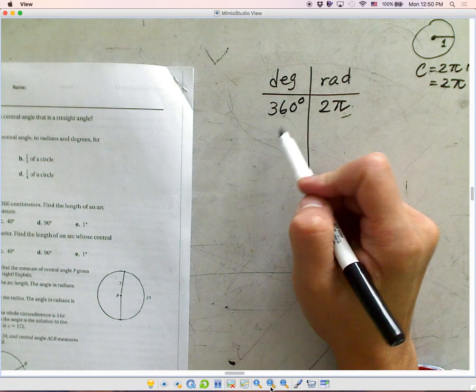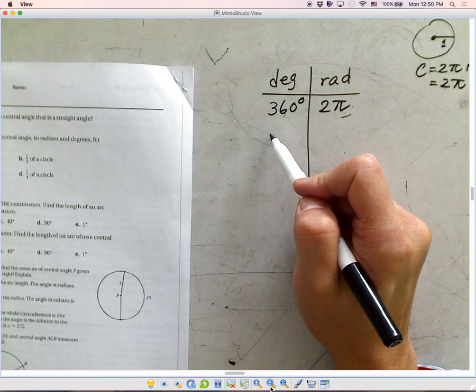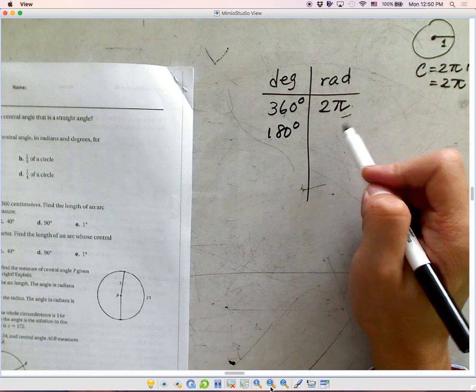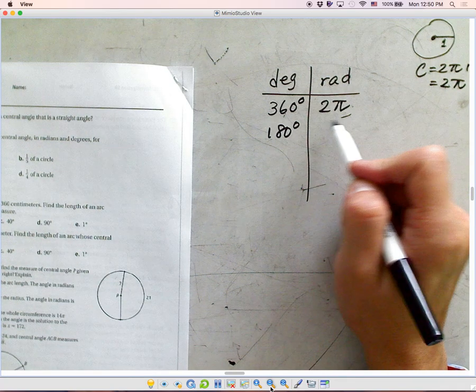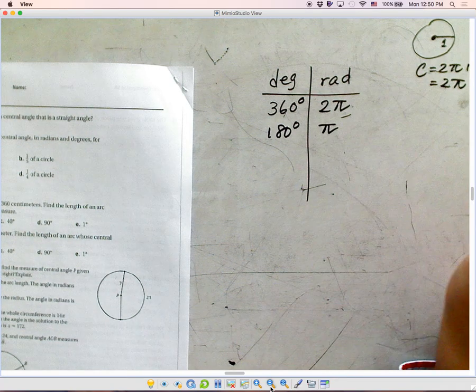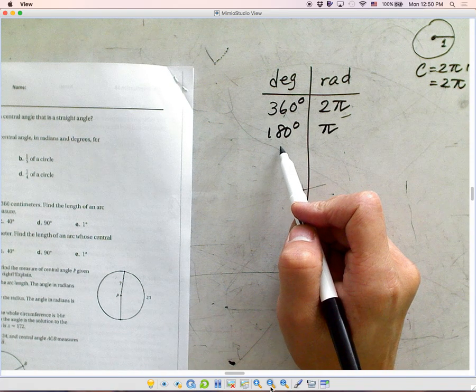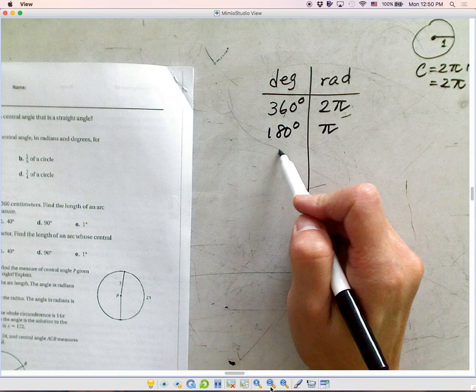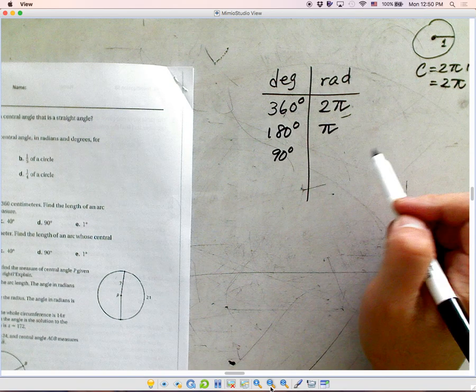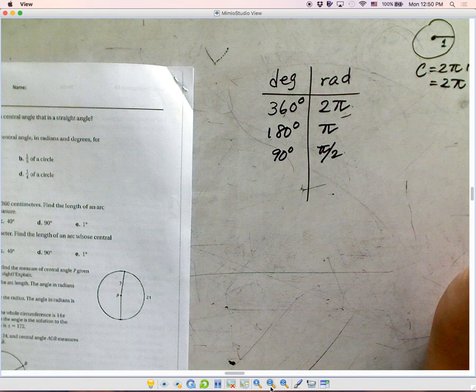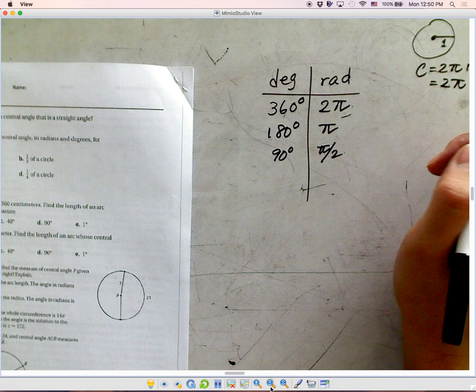What if we have a semicircle? How many degrees is that? It's half of it. So that's 180 degrees, which should be a half of 2π, which is 1π. We usually write π. How about the half of 180? What is the half of 180 degrees? That's 90 degrees. How about the radian? Half of π. Does that make sense?